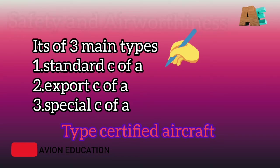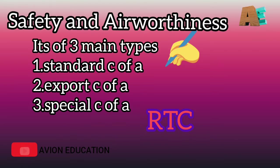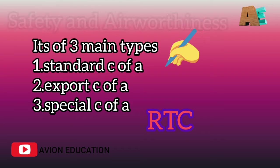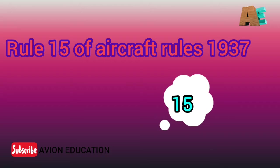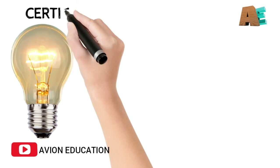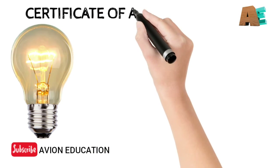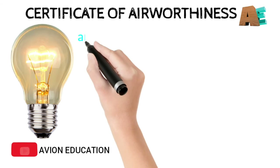Special C of A is given for those aircrafts having a restricted type certificate. Standard C of A is further classified into normal category, special category, and aerobatic category. According to Rule 15 of Aircraft Rules 1937, no aircraft can fly unless it has a valid C of A and Special C of A.